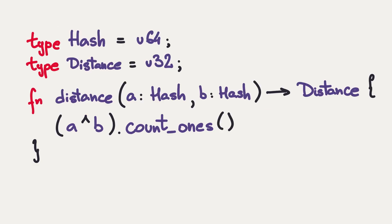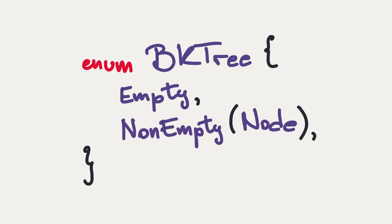Let's start with the distance function. Our distance function, expressed in terms of those extra two types, is just an exclusive OR of two hashes. And then we just count all the bits which are set. With the distance in place, for the sake of simplicity, we differentiate between empty and non-empty trees.